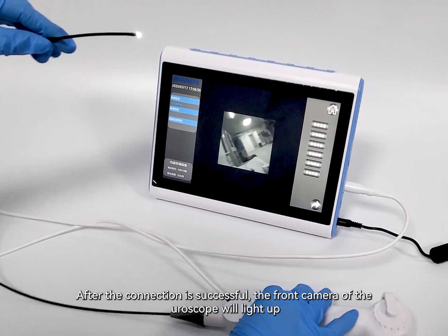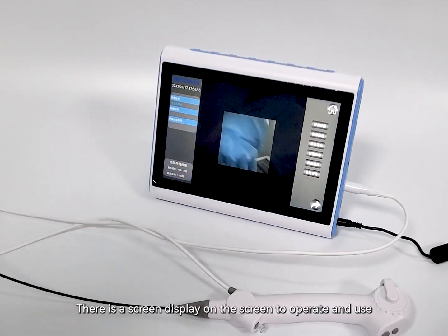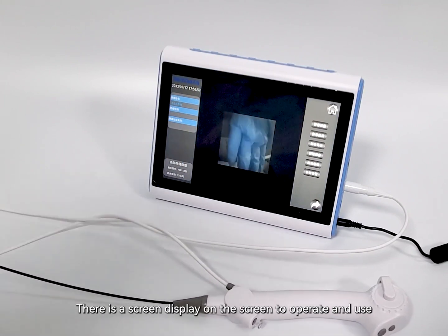After the connection is successful, the front camera of the ureteroscope will light up. There is a screen display to operate and use.